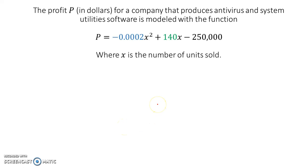All right, this is a quadratic equation problem where we're given a model for the profit in dollars for a company that produces antivirus and system utility software. And you can see what that model is right here. We know it's quadratic because there is an x squared term where x is the number of units sold.